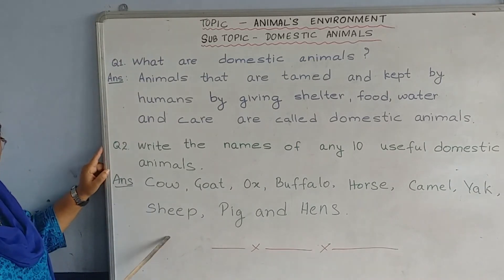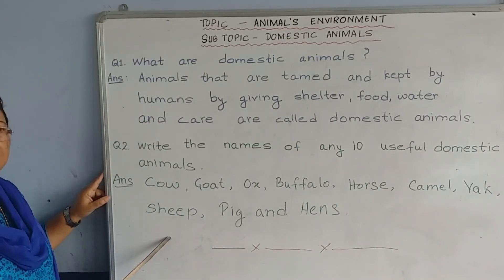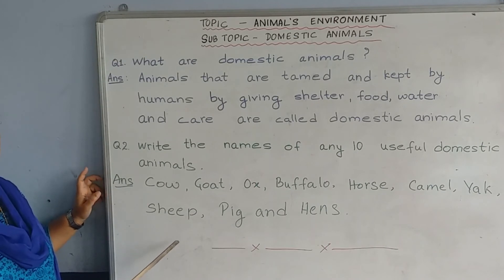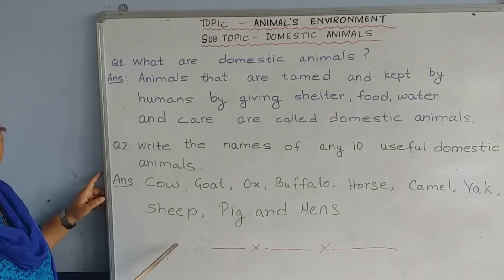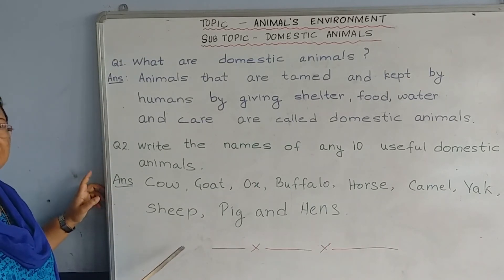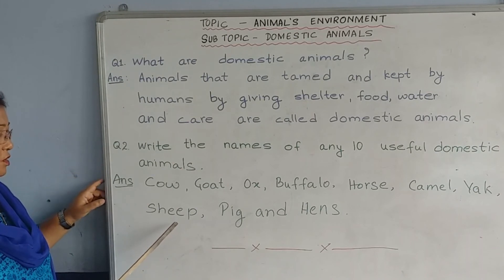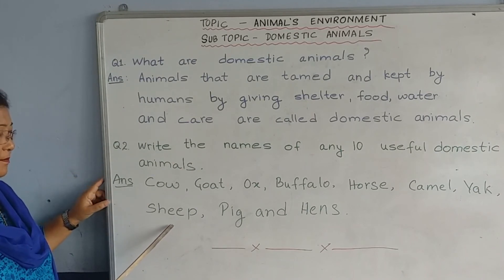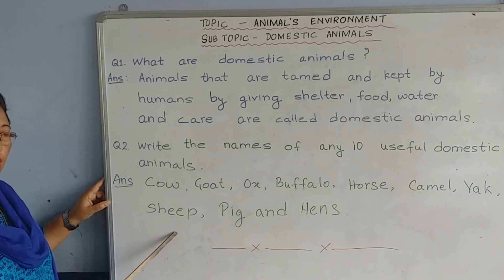And sheep — you know we use woolen clothes. So children, warm clothes like sweaters and jackets — all those warm clothes you get from wool. And sheep give us wool.